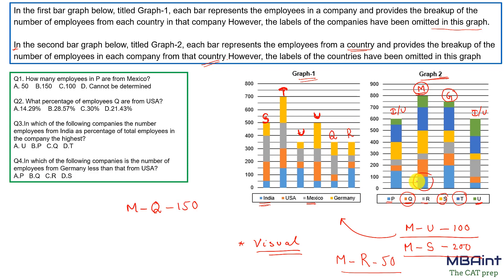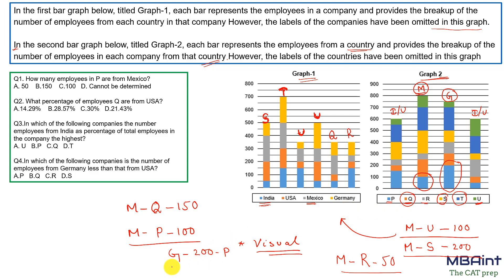Now for company P: Mexico for P is 100, leaving P and U to resolve. To find a unique value, we use the Germany data. In Graph Two (Germany), company P has 200 people. Tracing back into Graph One, out of the two remaining bars, the one with 200 people from Germany is P.